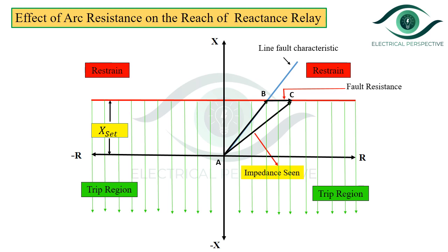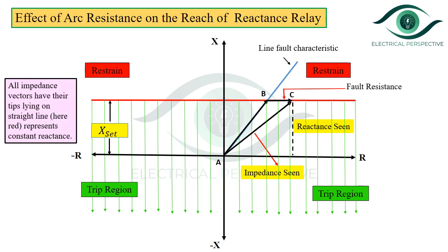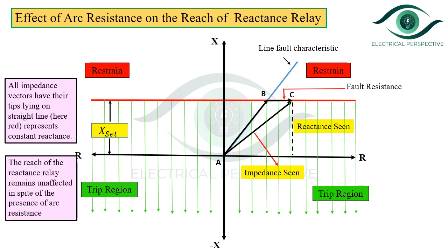Thus the reach of the reactance relay remains unaffected in spite of the presence of arc resistance. This is expected because the relay responds only to the reactive part of the impedance seen and trips only if that reactive part is less than the preset value X_s. All impedance vectors have their tips lying on the straight line representing constant reactance, confirming that the reach of the reactance relay is unaffected by arc resistance.